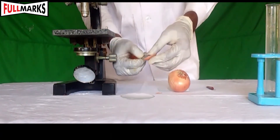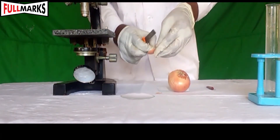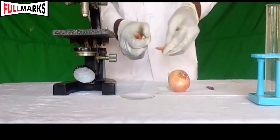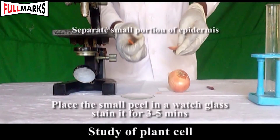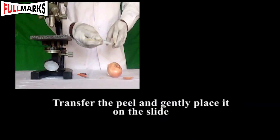Remove the peel of the onion with the help of a needle and separate a small portion of the epidermis. Keep dilute safranin solution in a watch glass and put the small peel into the watch glass with a brush, allowing it to stain for three to five minutes.